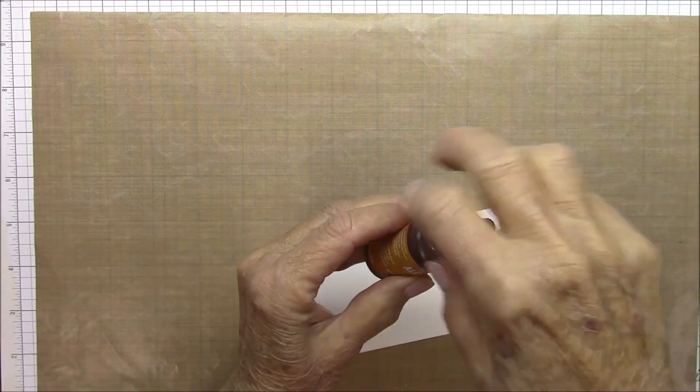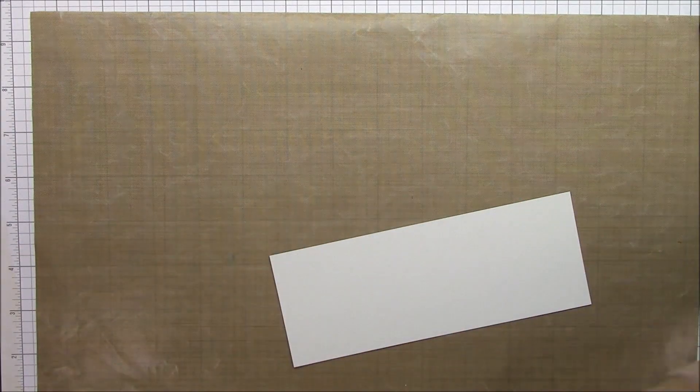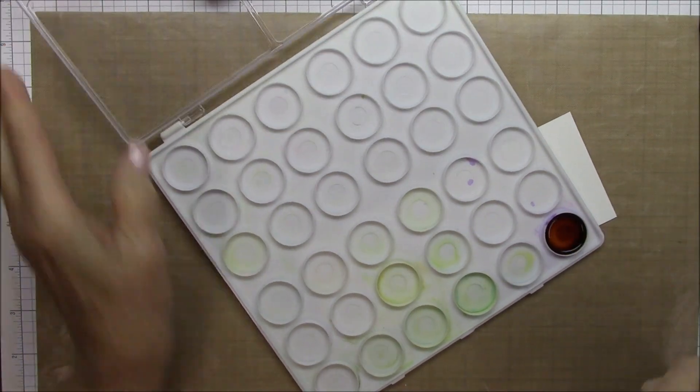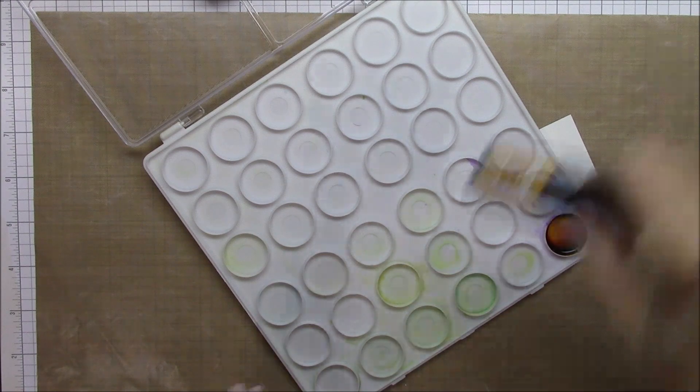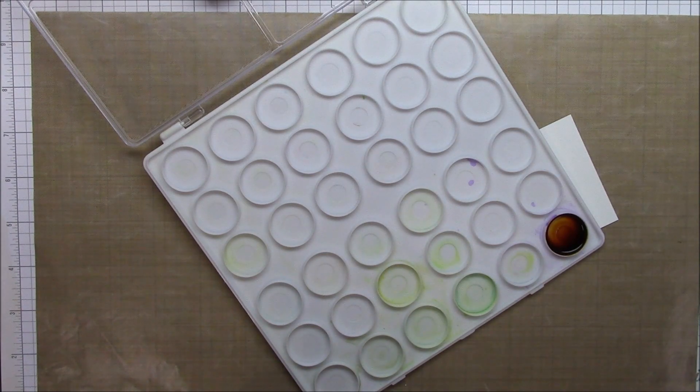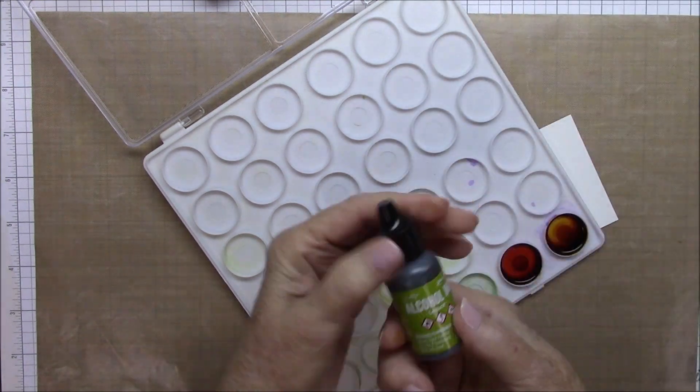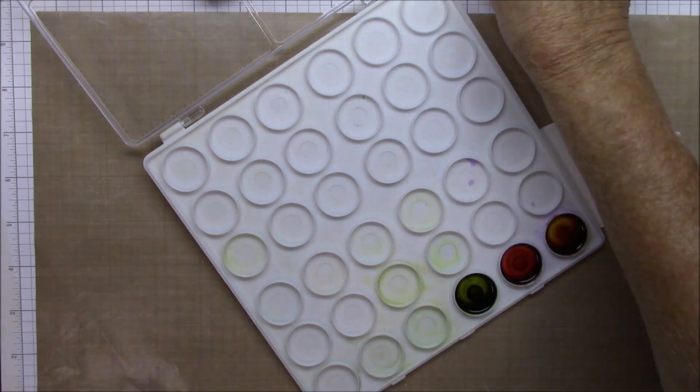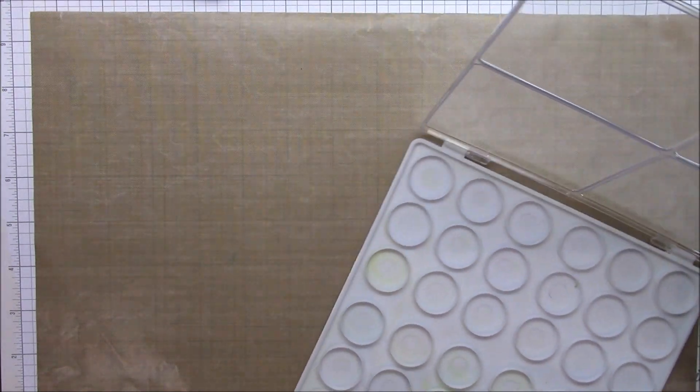I will put a little bit of every color that I'm going to use in the cups before I get started. I just cover the bottom basically of each color, and then I will put a little bit of just clear alcohol in two of the cups, because sometimes I just want just a touch of clear and no color.